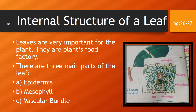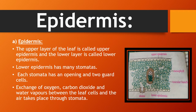Here in the picture, which is given in your books, you can see the internal structure of the leaf. If you cut a leaf and examine a piece under a microscope, the leaf consists of upper and lower epidermis, mesophyll cells, and vascular bundles. The upper layer of the leaf is called upper epidermis and the lower layer is known as lower epidermis. Each lower epidermis has many stomata.